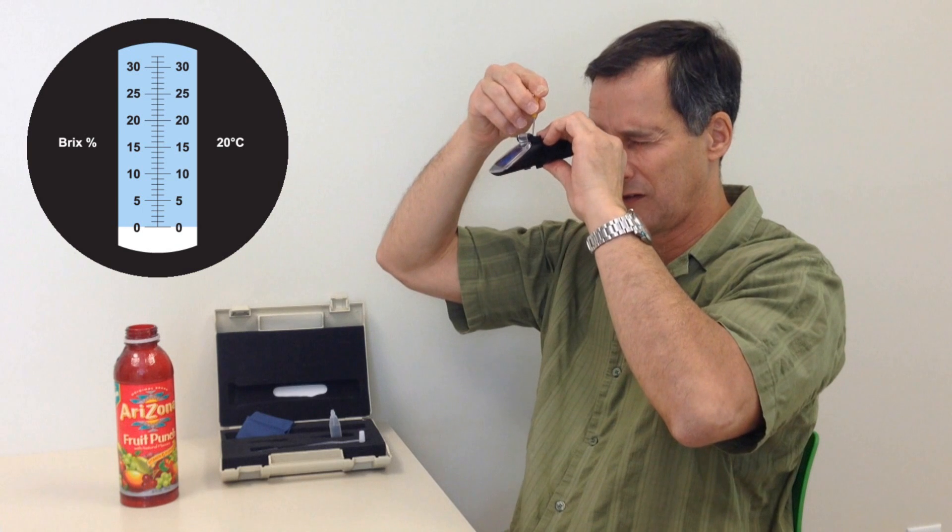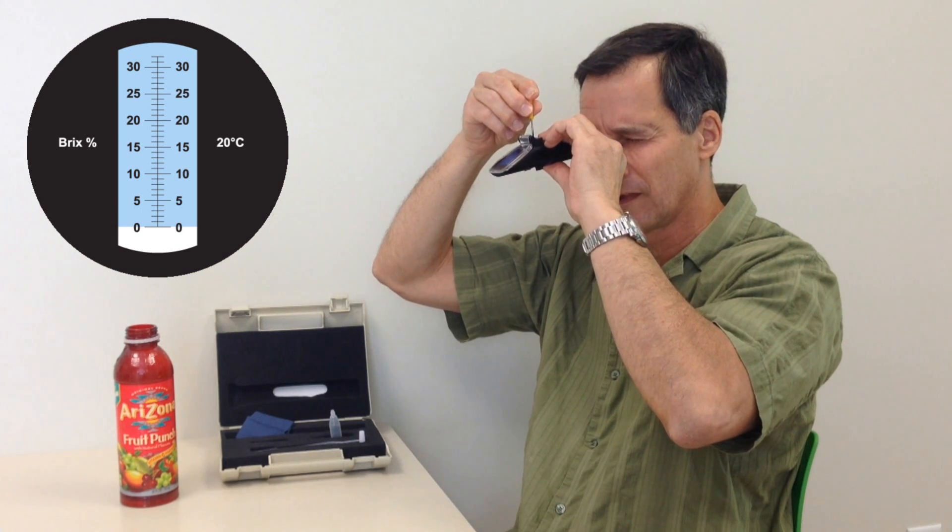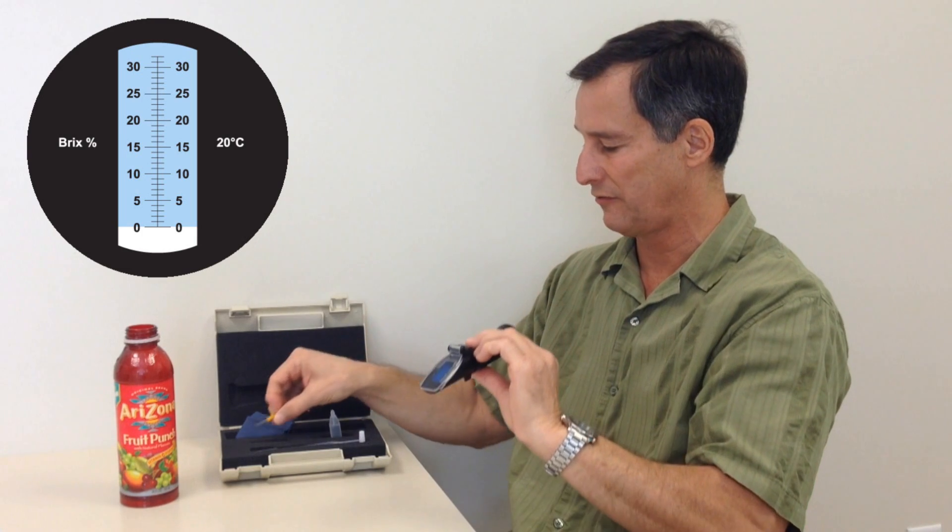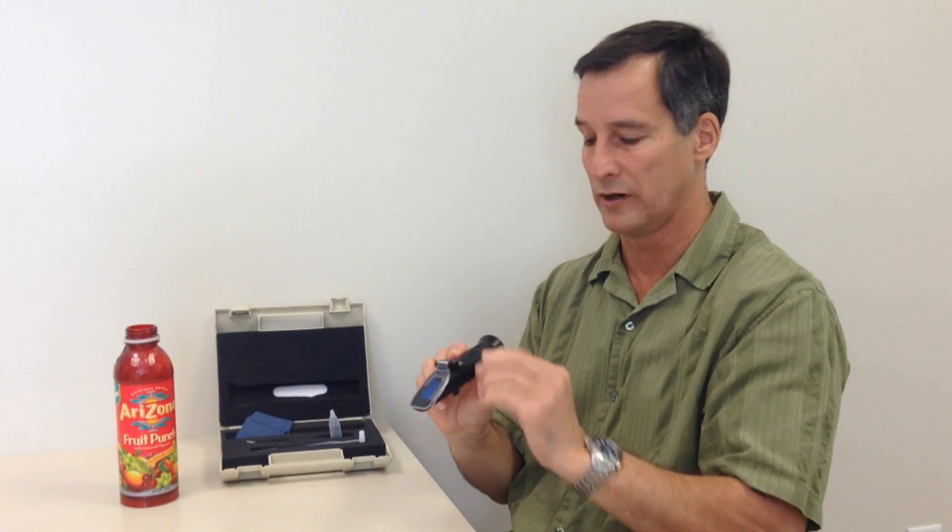If it's not on zero, we turn this screw until it's exactly on zero. Now I've calibrated the refractometer to zero at distilled water.